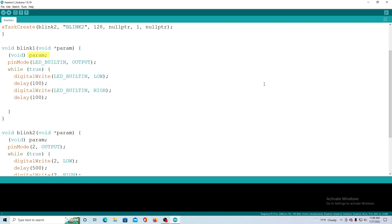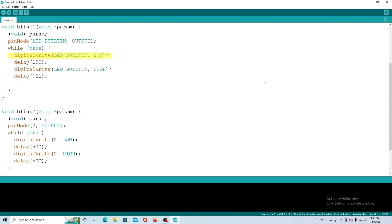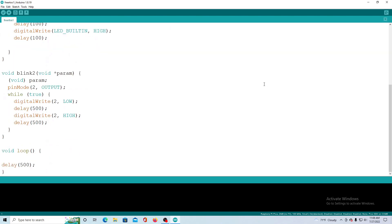Param is used as the task handle and is required in each task. Within the while loop we use digital write as we did before to toggle the pin and we use the delay function for timing.